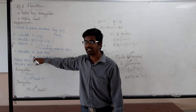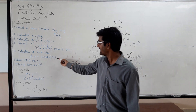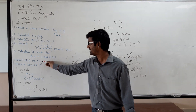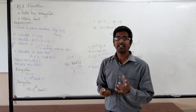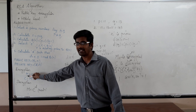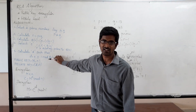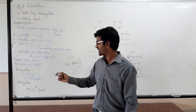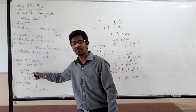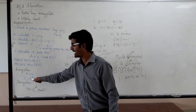After calculating D and E, the public keys are E and N, and the private key is D and N. In public key cryptography, public keys are used for encryption. For encryption, take a message M — that M should be less than N — and compute M power E mod N.